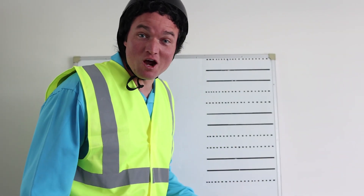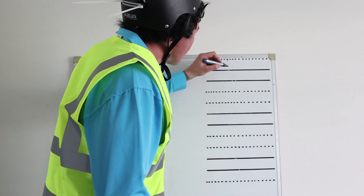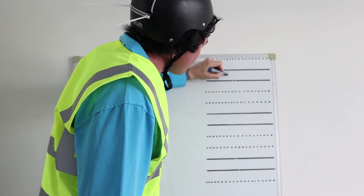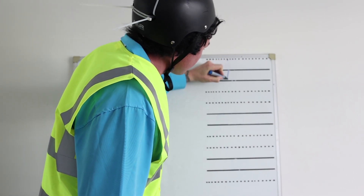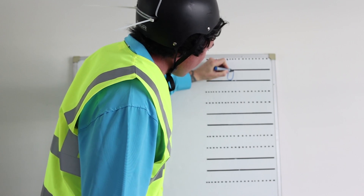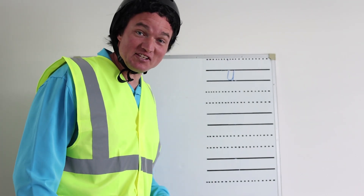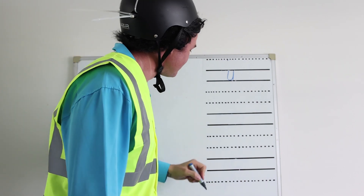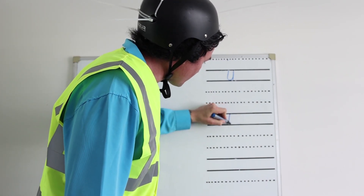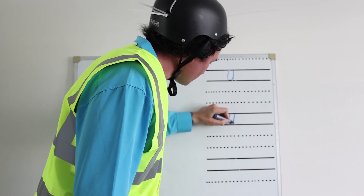This is how we write the letter U. We start here, we go down, curve back up, and straight down. Let's do that again. We start here, we curve around, go back up, and straight down.